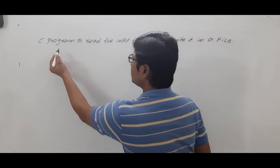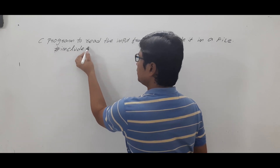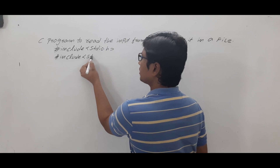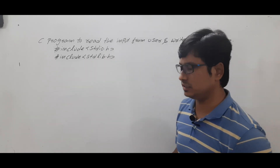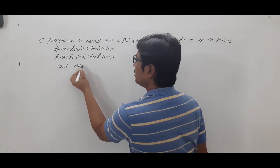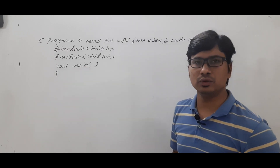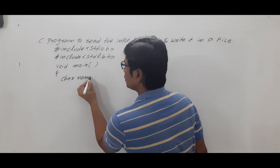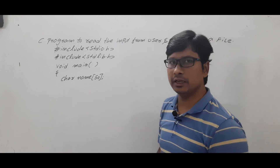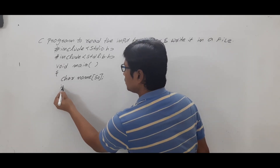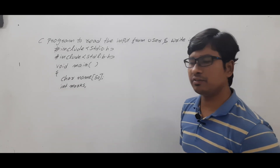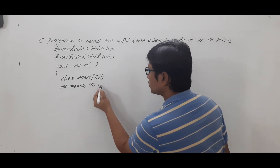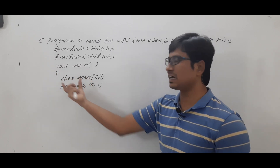To do that I need to include two header files: stdio.h and stdlib.h. The purpose of stdlib.h will become clear when I use a function called exit. Then I open the main function with return type void, so it does not return any value. I declare a character array called name with size 50 and an integer variable called marks. I also declare a variable n to store the number of students.